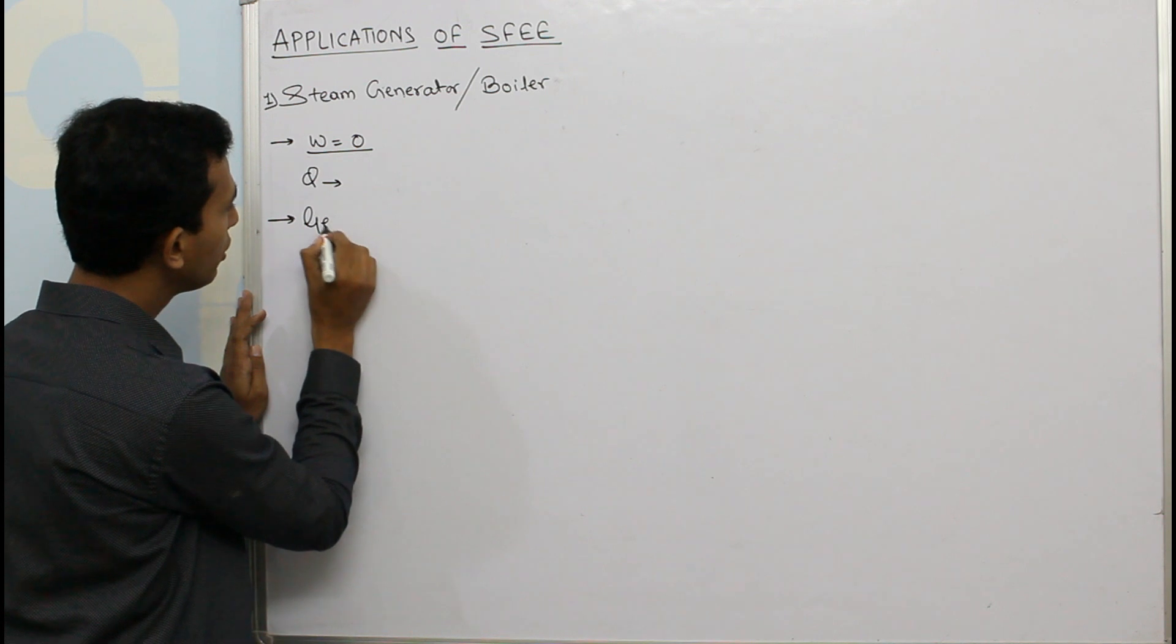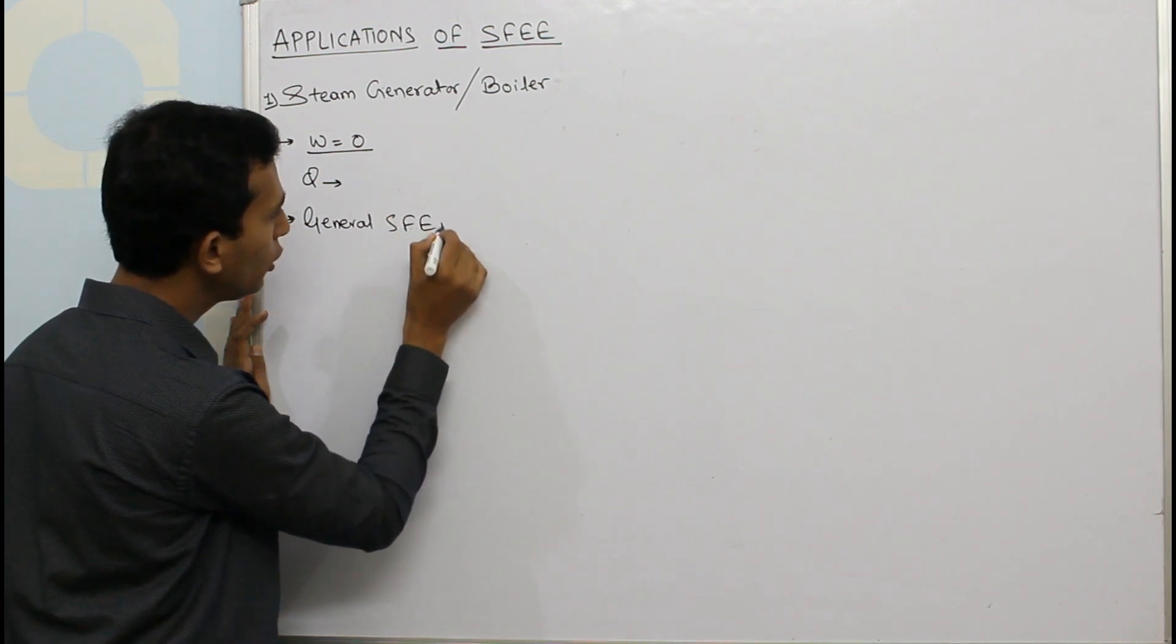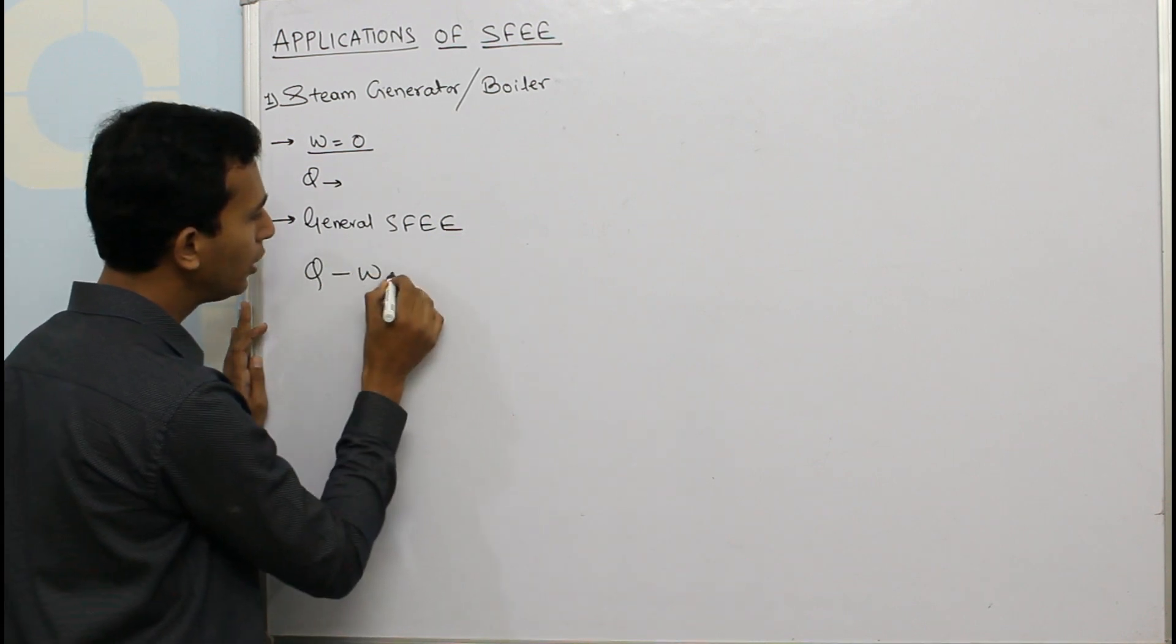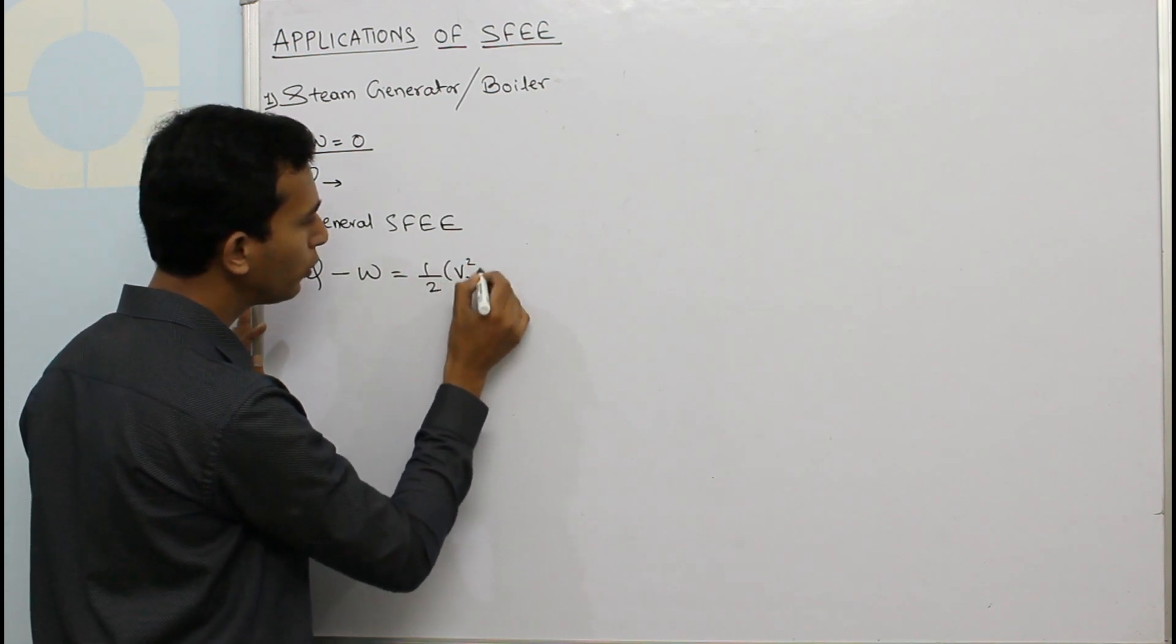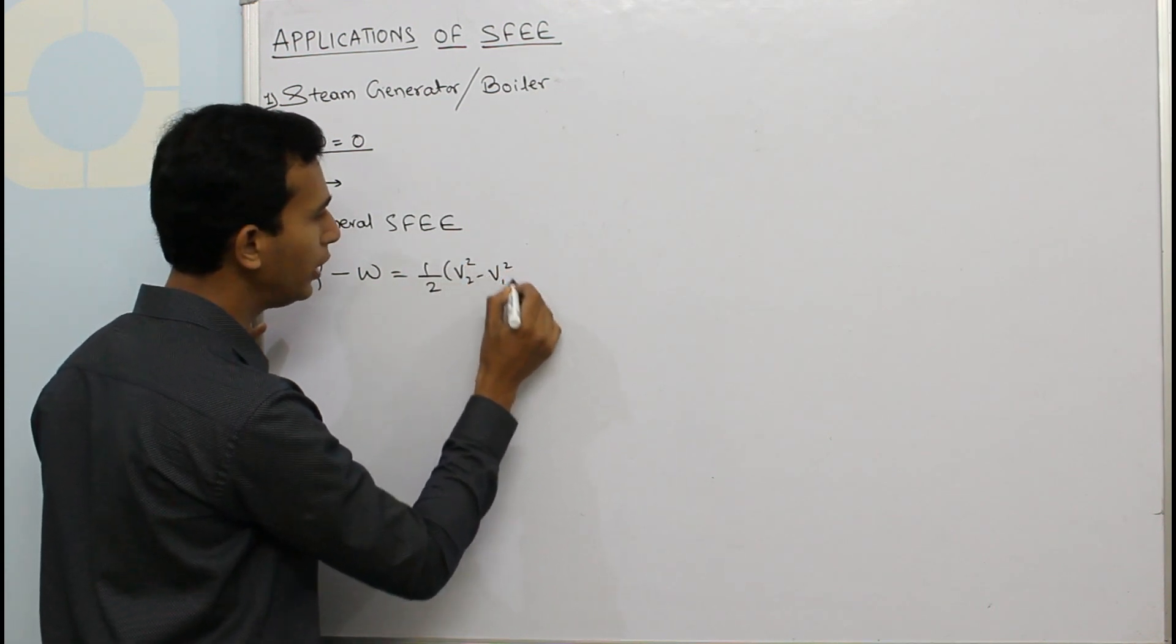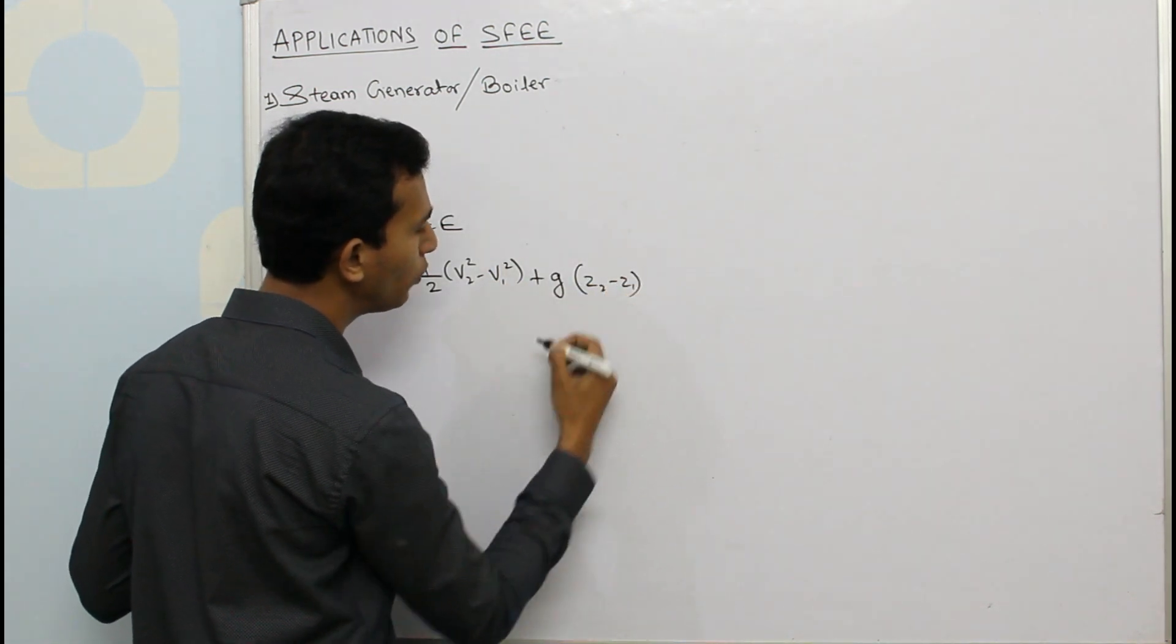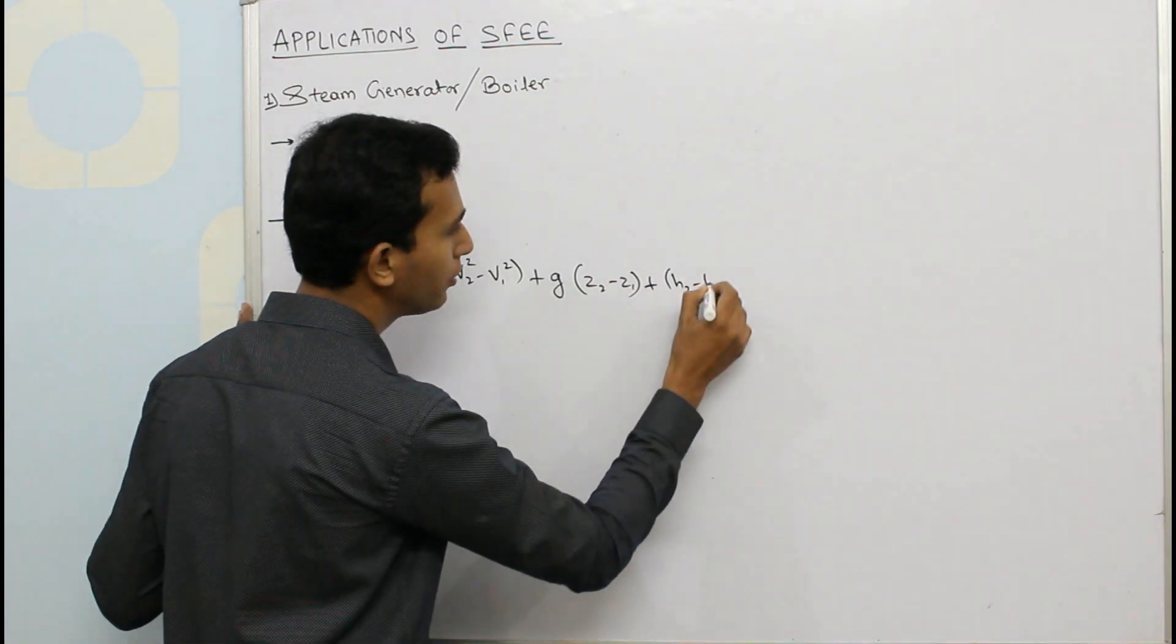In general, steady flow energy equation is given by Q minus W equals half of V₂² minus V₁² plus g into Z₂ minus Z₁ plus H₂ minus H₁. So this was on unit mass basis.